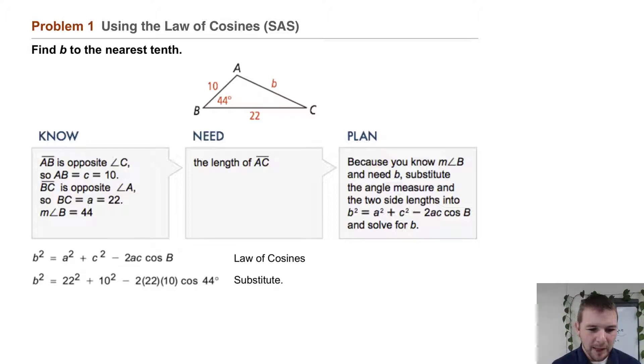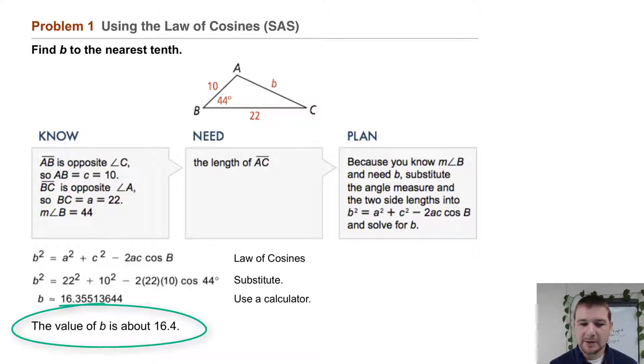Substituting, we find B squared equals 22 squared plus 10 squared minus 2 times 22 times 10 times the cosine of 44 degrees. At this point, we get to use a calculator to come up with a decimal approximation. B is approximately equal to 16.36. Or we can state the value of B is about 16.4.